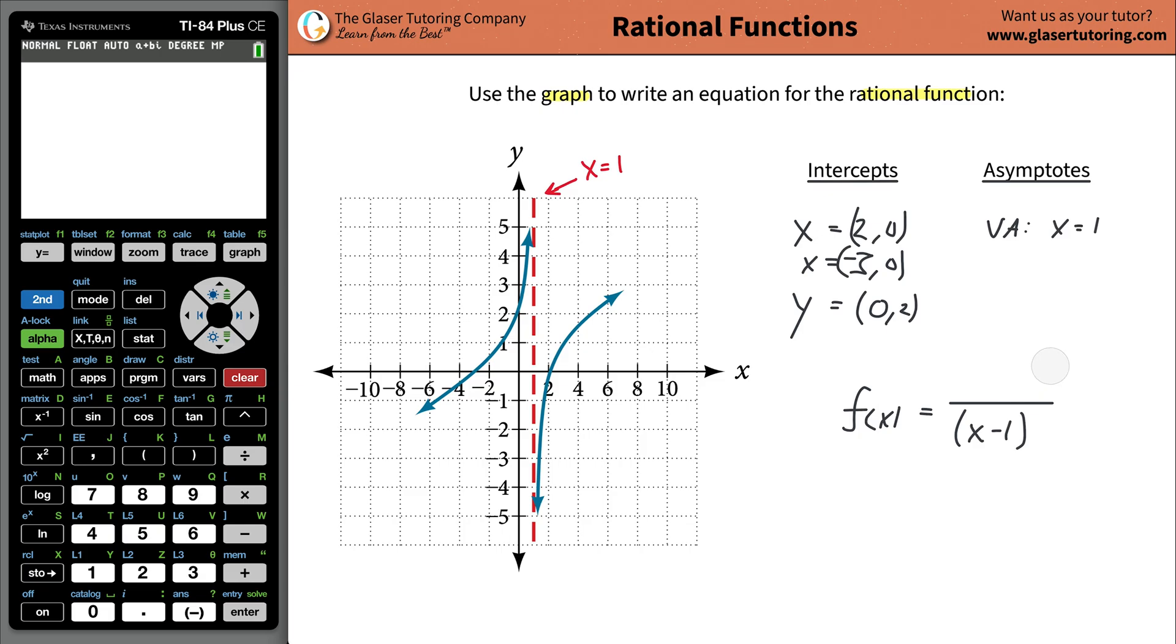Then we're going to turn our attention. And if you had two vertical asymptotes, you would have done the same thing. Just write another factor, multiply it down there. Now we're going to turn our attention to the X intercepts.